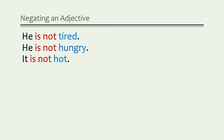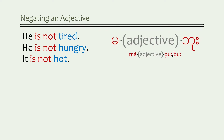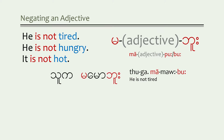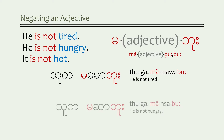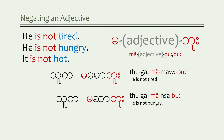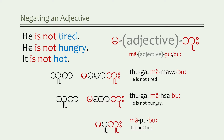You're going to use the same structure to negate an adjective as a verb: the first particle ma, followed by the adjective, then the final particle poo, or more often boo. So in Myanmar, to say 'he is not tired': tuga mamoboo. 'He's not hungry': tuga masaboo. 'It is not hot': mapooboo.